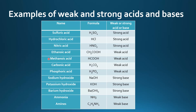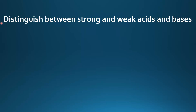Some examples of weak acids: there's ethanoic acid and methanoic acid — these are carboxylic acids — and we have carbonic acid and phosphoric acid. Moving on to some examples of strong bases: we have sodium hydroxide, potassium hydroxide, and barium hydroxide. And then finally some examples of weak bases: we have ammonia and the amines.